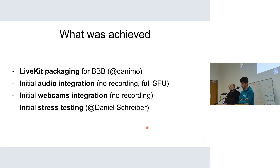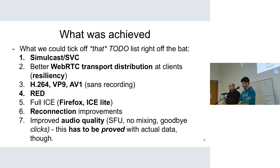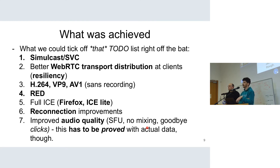Going back to that list of to-do items with our current media stack — just by switching to LiveKit, we can say we've implemented the majority of it. The demo has simulcast enabled, better client-side distribution of WebRTC transports, H.264, VP9, and AV1 with RED enabled. It uses a full ICE implementation which fixes the Firefox incompatibility issue, along with a lot of reconnection improvements and improved audio quality. No mixing through FreeSwitch should help, but this has to be proved with actual data, which we plan to do in the future.